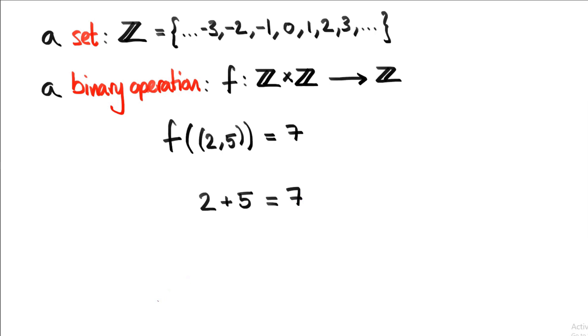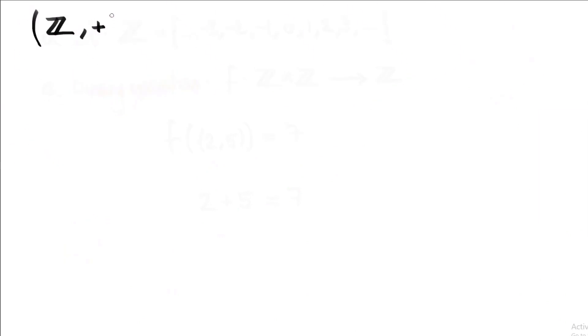The binary operation has to follow some special rules before we're allowed to call these two things together a group. So let's see what those special rules are. We can write the combination of the set and the binary operation inside brackets. Here we've written the set Z, comma, and then the plus symbol to represent the binary operation of addition.